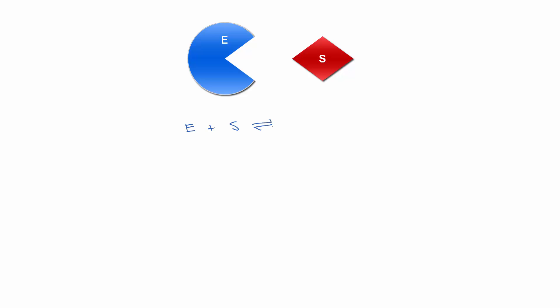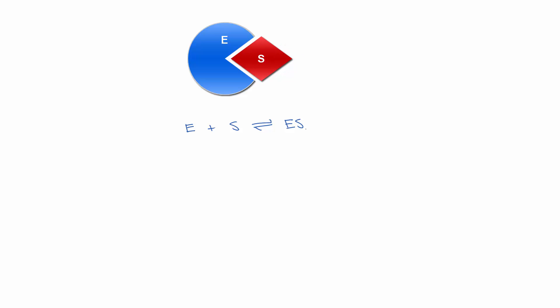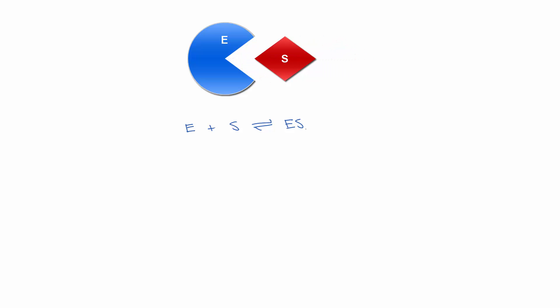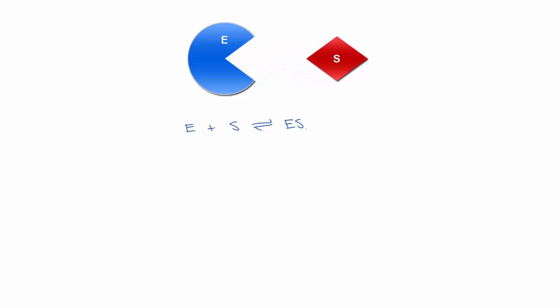The enzyme and the substrate will interact and they will bind to form an enzyme-substrate complex. They will bind and then unbind, bind and then unbind, creating an equilibrium between the bound and the unbound state.